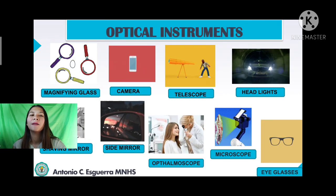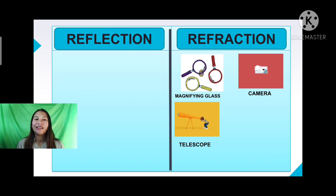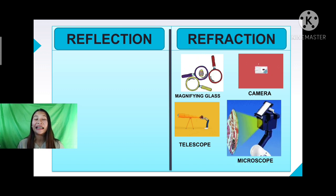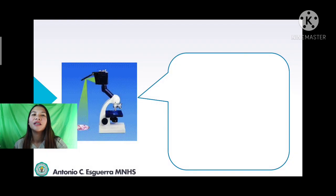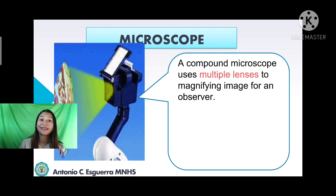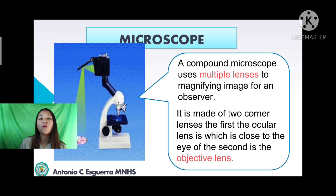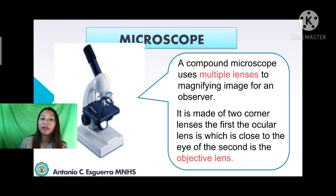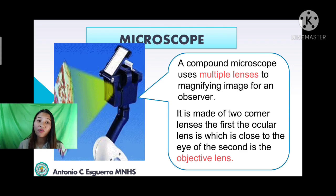Let's now proceed with our fourth optical instrument: the microscope — it is refraction. A compound microscope uses multiple lenses to magnify an image for an observer. It is made of two main lenses: the ocular lens, which is close to the eye, and the objective lens. This optical instrument uses multiple lenses to enlarge the image of a sample.